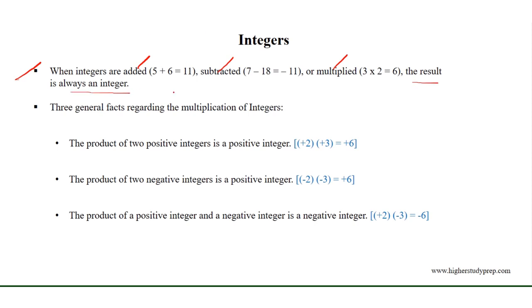For example, 5 plus 6 is equal to 11. 7 minus 18 equals minus 11. 3 times 2 equals 6.